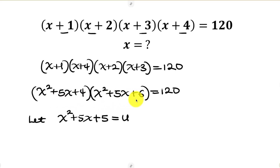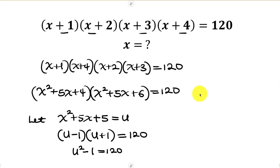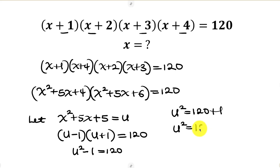Let x squared plus 5x plus 5 equal u. Rewriting the expressions: the first bracket becomes (u minus 1), and the second bracket becomes (u plus 1), and this is equal to 120. We have a difference of two squares here: u squared minus 1 equals 120. Moving negative 1 to the right-hand side gives u squared equals 121.